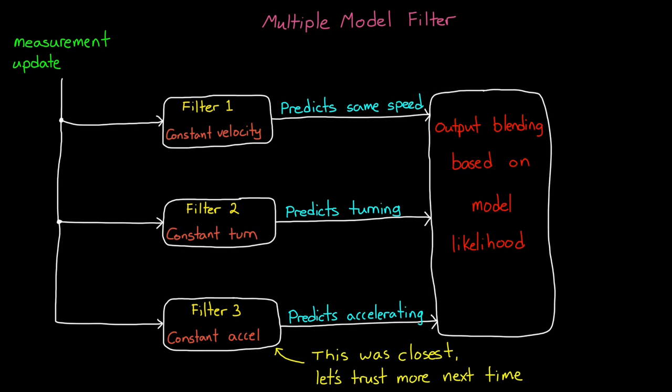But there is still one more step to get to interacting multiple models. The problem we have with the current way we've set up the filters is that each one is operating on its own, isolated from the others. This means that for a model that doesn't represent the true motion, it's still going to be maintaining its own bad estimate of system state and state covariance. Then if the object changes motion, and there's a transition to this model with its bad state estimate and covariance, the filter is going to take some time to converge again. So in this way, every time there's a transition to a new motion, the transient period will be longer than necessary while the filter is trying to catch up.